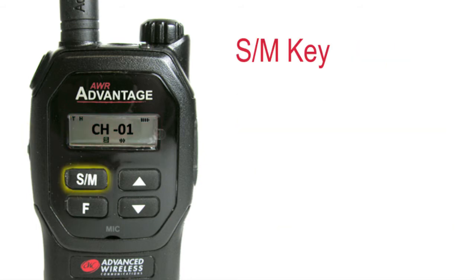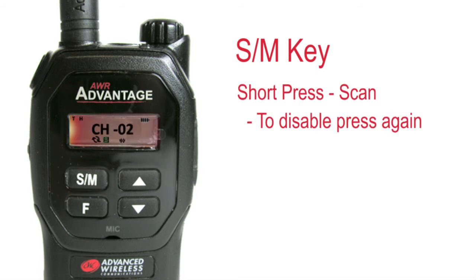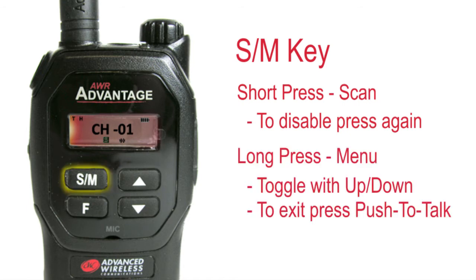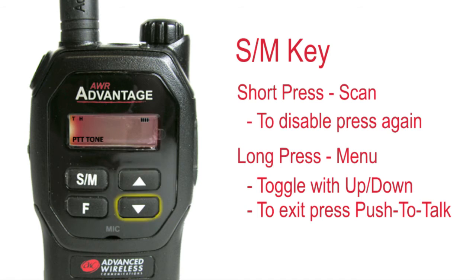The SM key is the scan and menu option. A short press enables the scan function; to disable, press the SM button again. A long press will open the menu mode. To toggle through the options, press the up or down keys. To exit, press the F key.